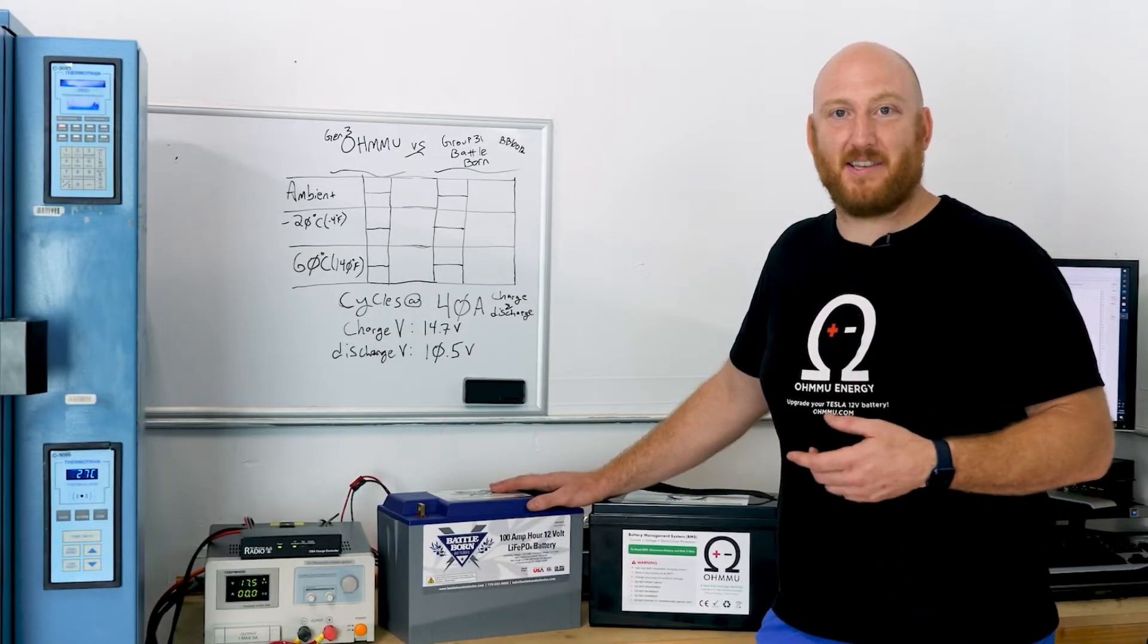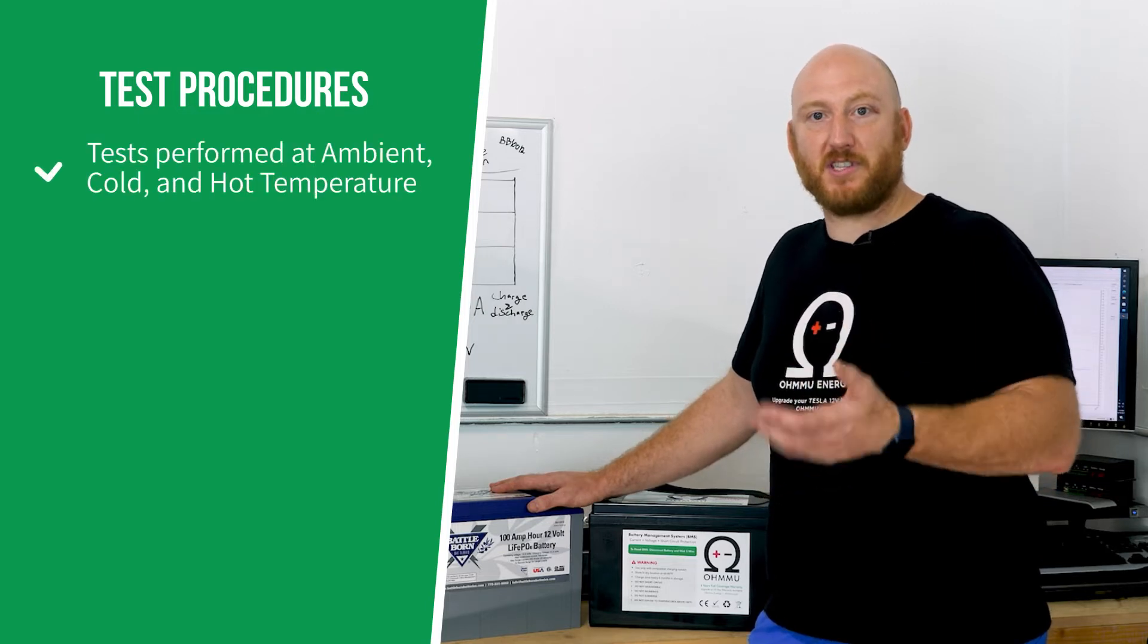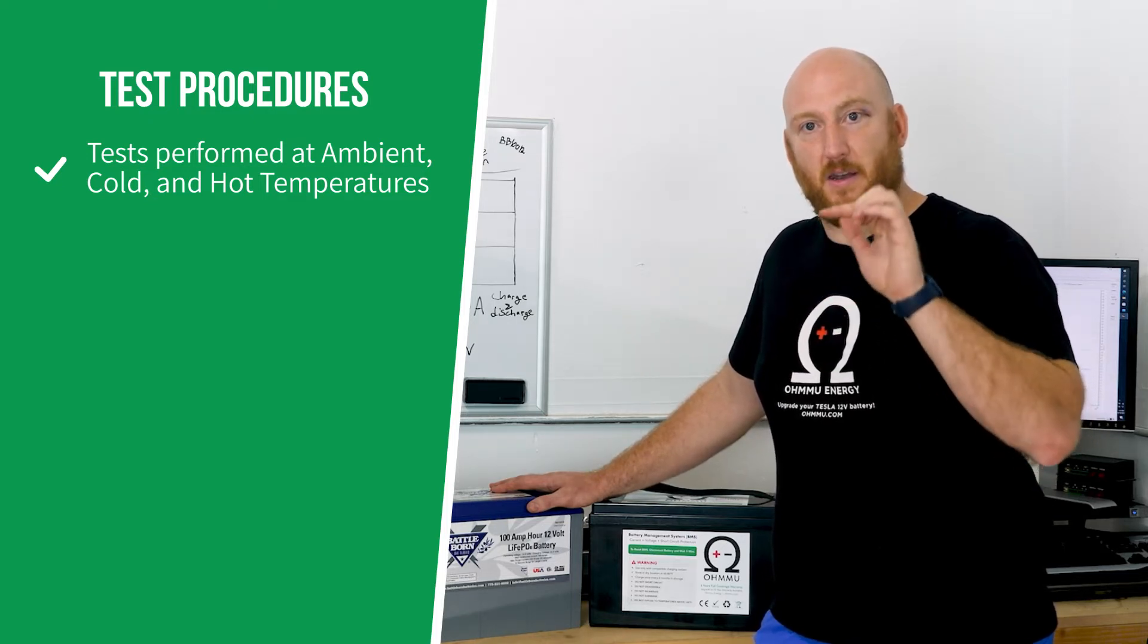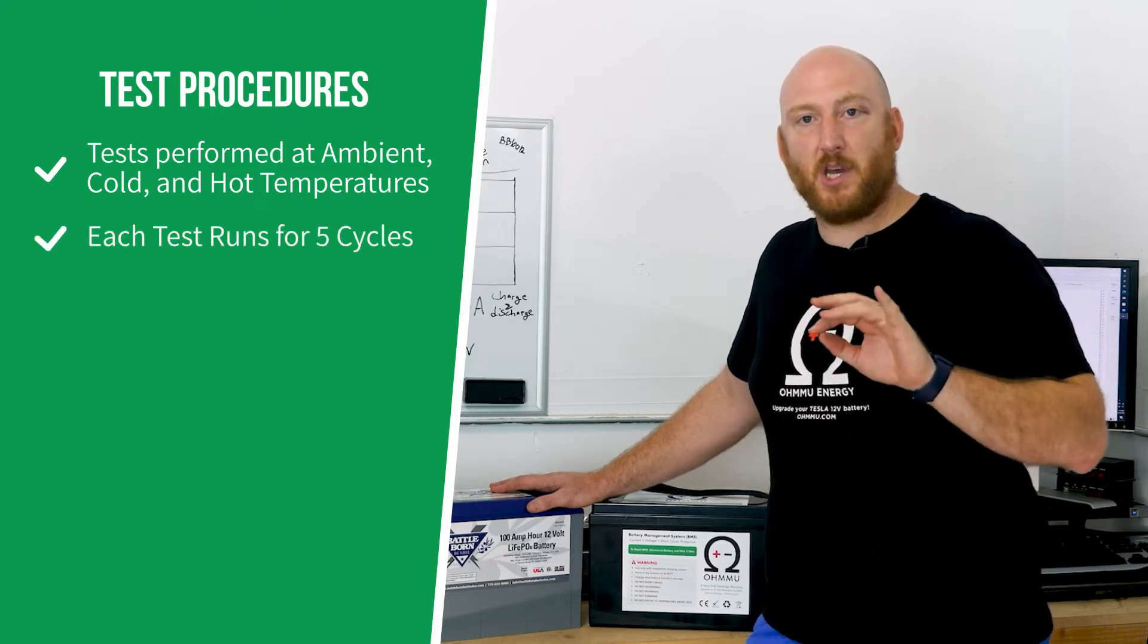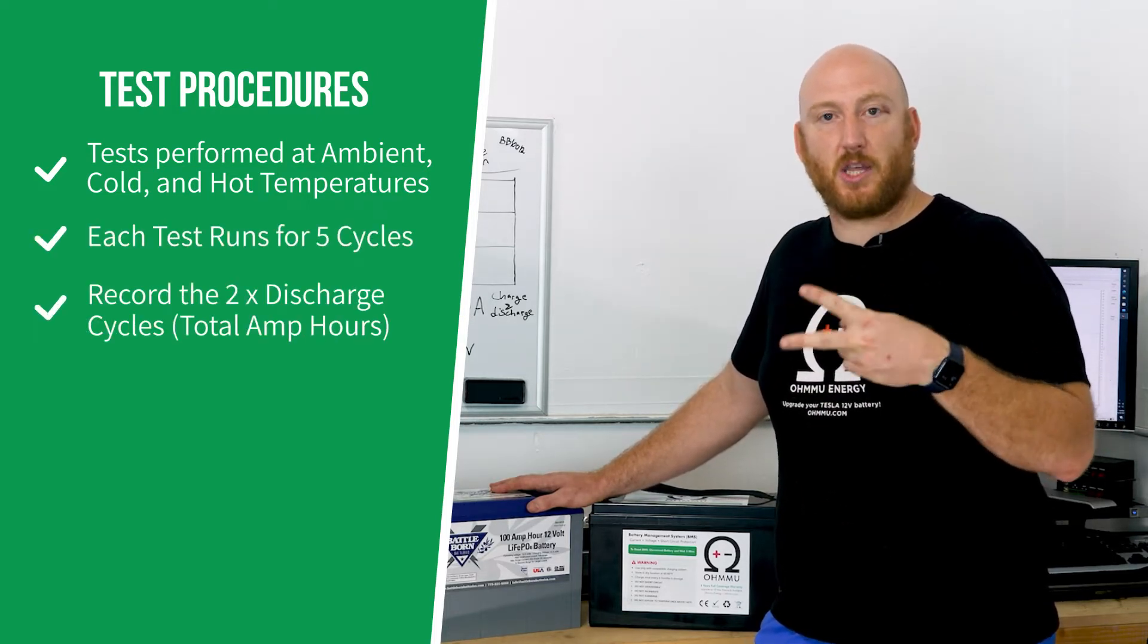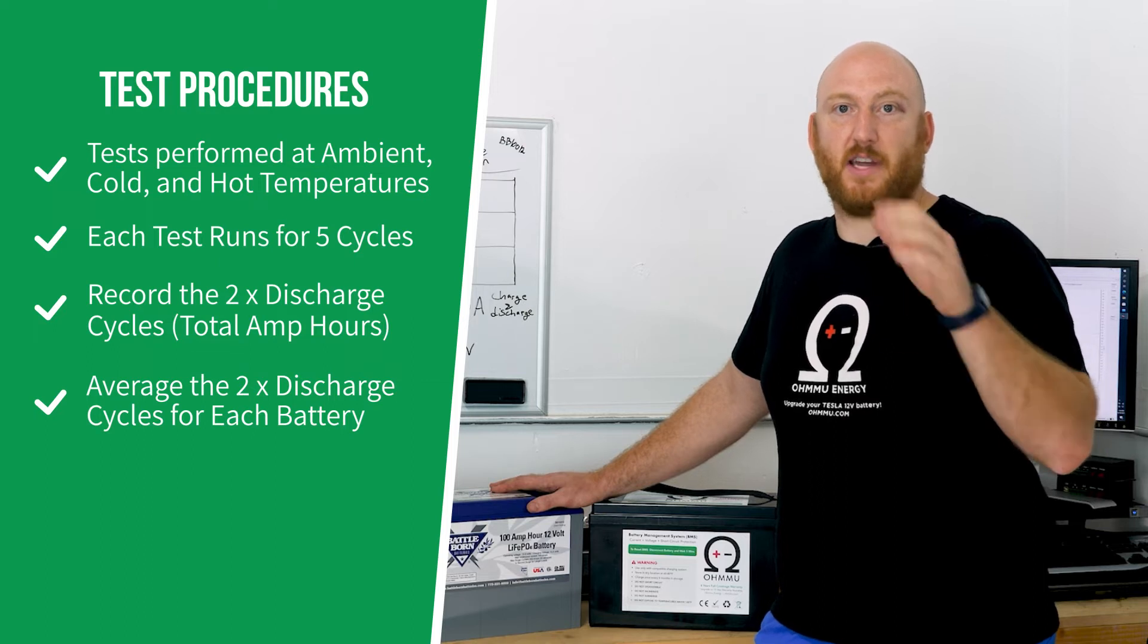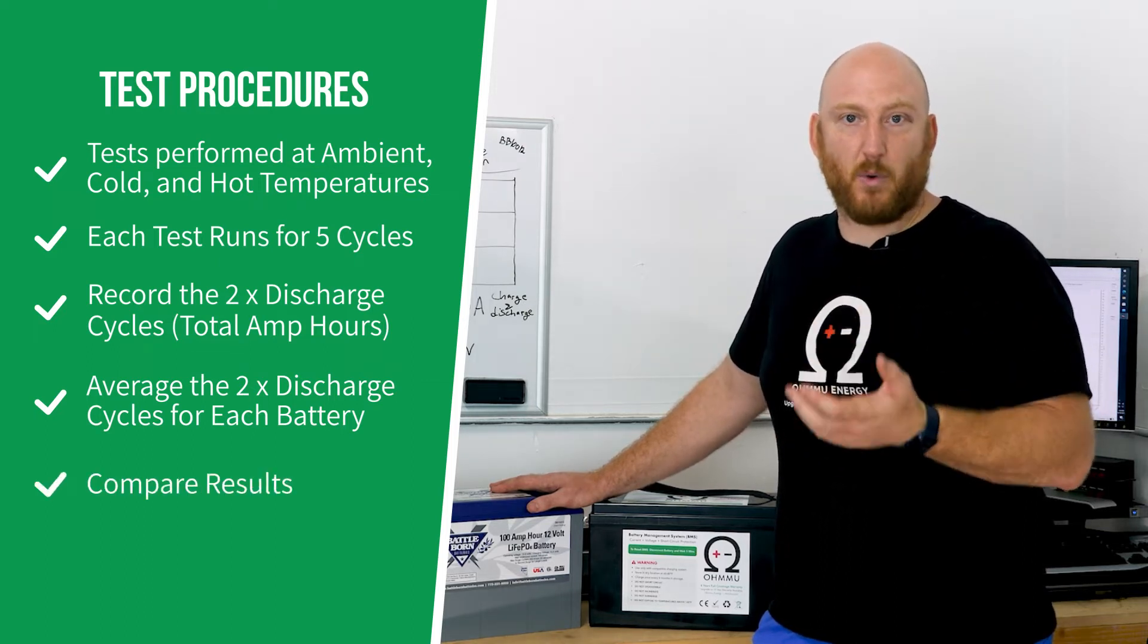We'll be doing tests on each of these batteries at various temperatures. For the first test, we're going to run them at ambient temperature. We're going to do a charge just to top charge it, then a discharge, charge again, discharge again, and then charge again. We're going to pull the two discharge cycles out and look at those two discharge total amp hours. Then we're going to average those and get one number for each battery for each test.